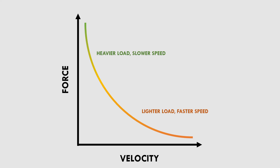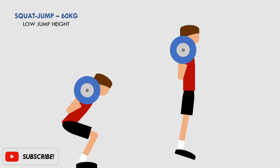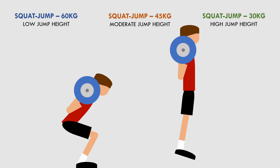To use a practical example, let's take the squat jump as a power exercise. Let's say we load 60 kilos on the bar for a particular athlete and get them to jump as fast and as high as possible. Since the athlete is jumping with a significant external load, jump height won't be very high. If we then load 45 kilos on the bar, the athlete can now jump higher than before. If we then reduce the load further to 30 kilos, the athlete can jump much higher and move much faster once again. So as the load decreases, the movement speed and jump height increases.